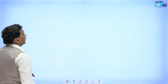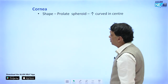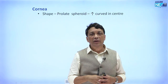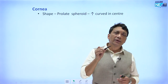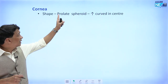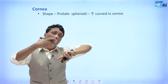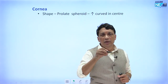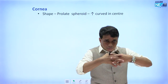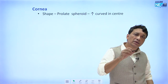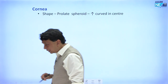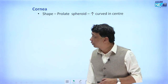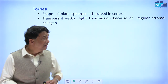The shape of the cornea is an important question — it is not a perfect sphere. It is called a prolate spheroid, meaning it is more curved in the center than at the periphery. This greater central curvature makes the cornea more powerful in the center, bending more light there. An oblate spheroid, by contrast, is more curved at the periphery.